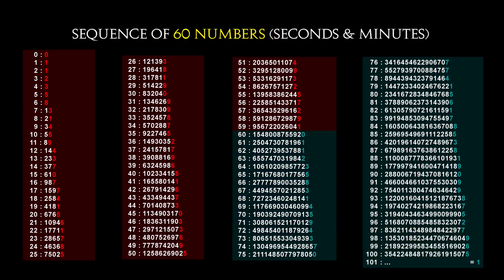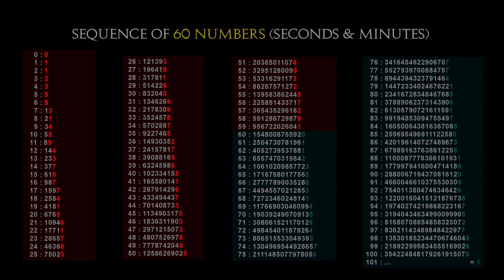Now focus on the last digit of the Fibonacci numbers to find another infinite sequence, this time of 60 numbers, which coincides with there being 60 seconds in a minute and 60 minutes in an hour.